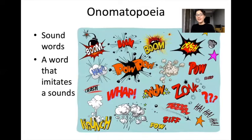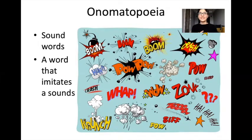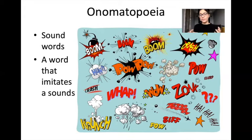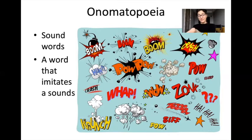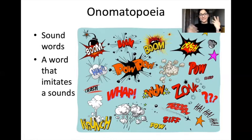Then you have onomatopoeia. Onomatopoeia are sound words — words that imitate a sound. Imitate means to copy. For example, when there's an explosion, you might hear a boom sound, so boom is an example of onomatopoeia. You have zonk, pal, crash, and someone laughing at the bottom — those are all examples of onomatopoeia. They make you hear that sound.